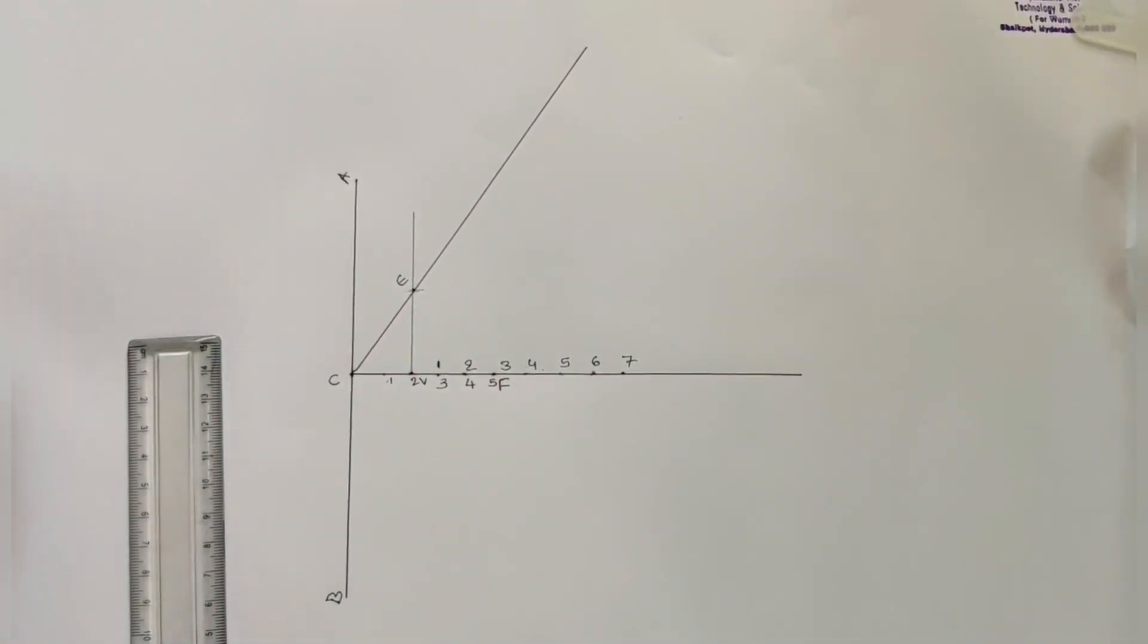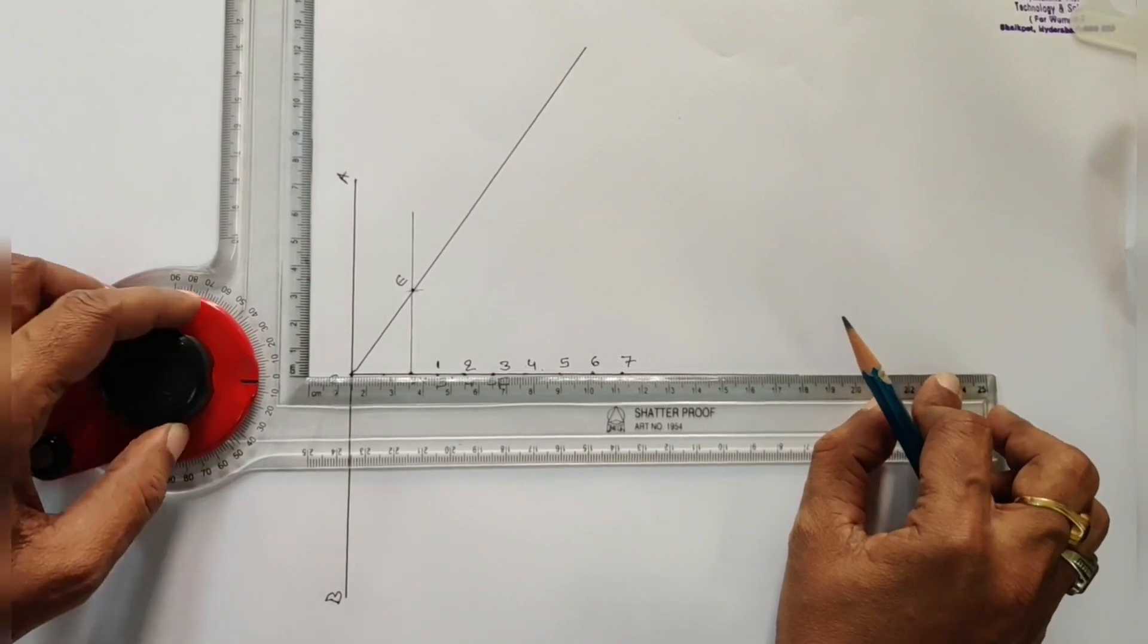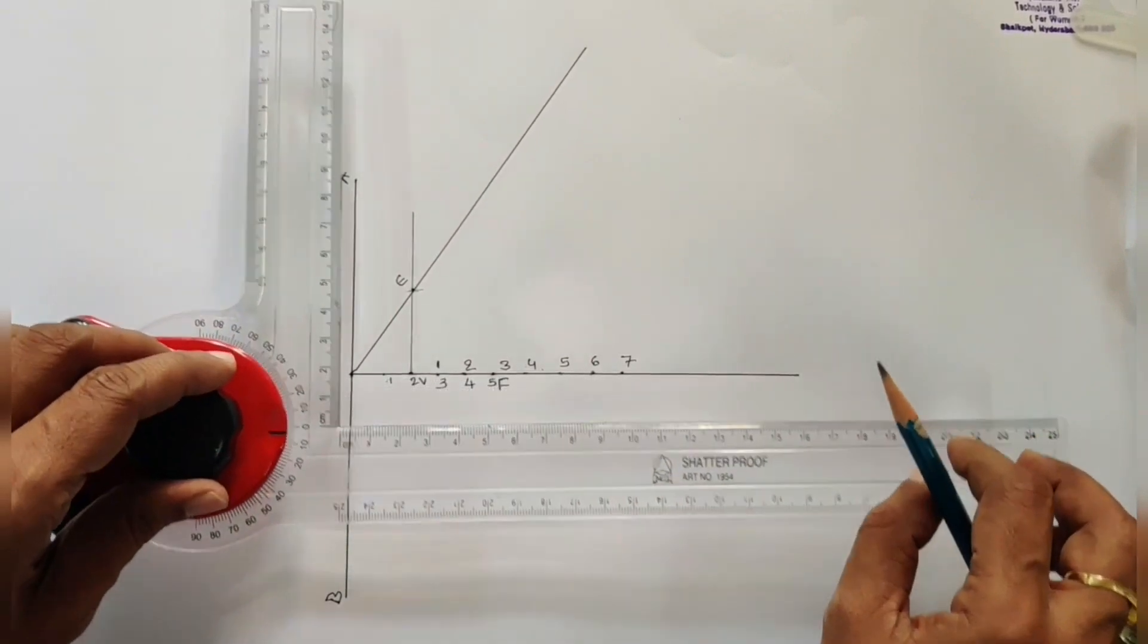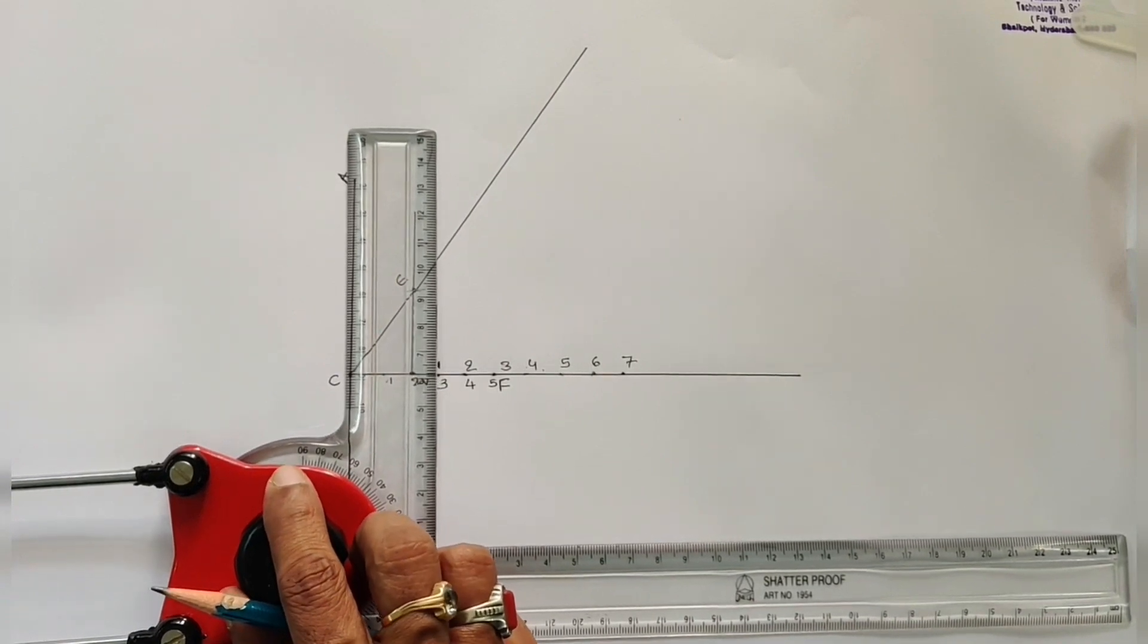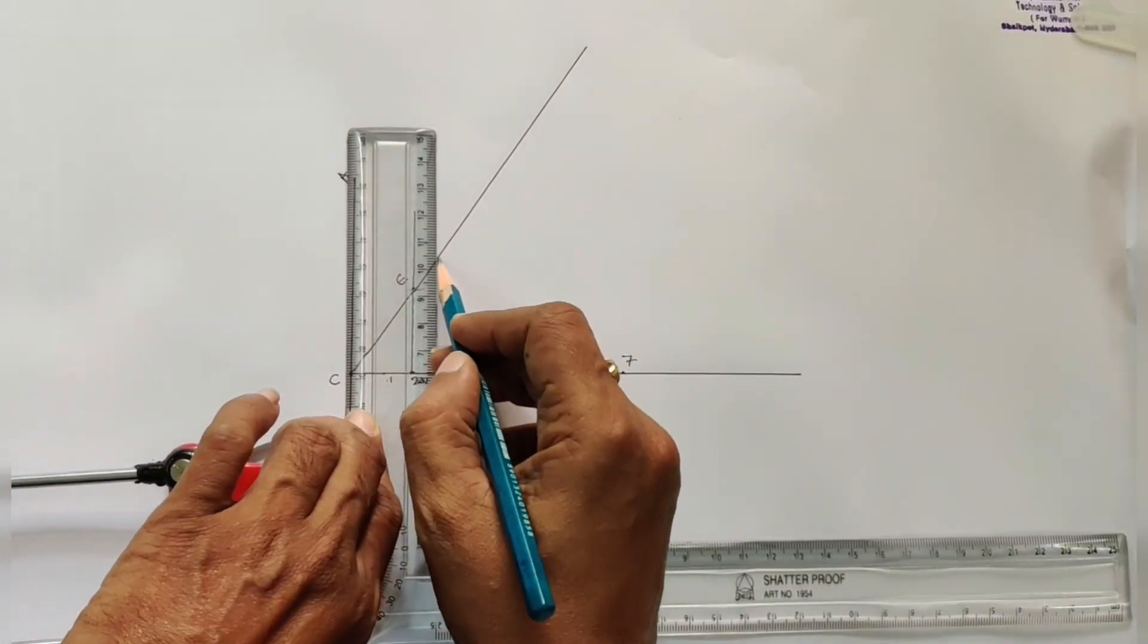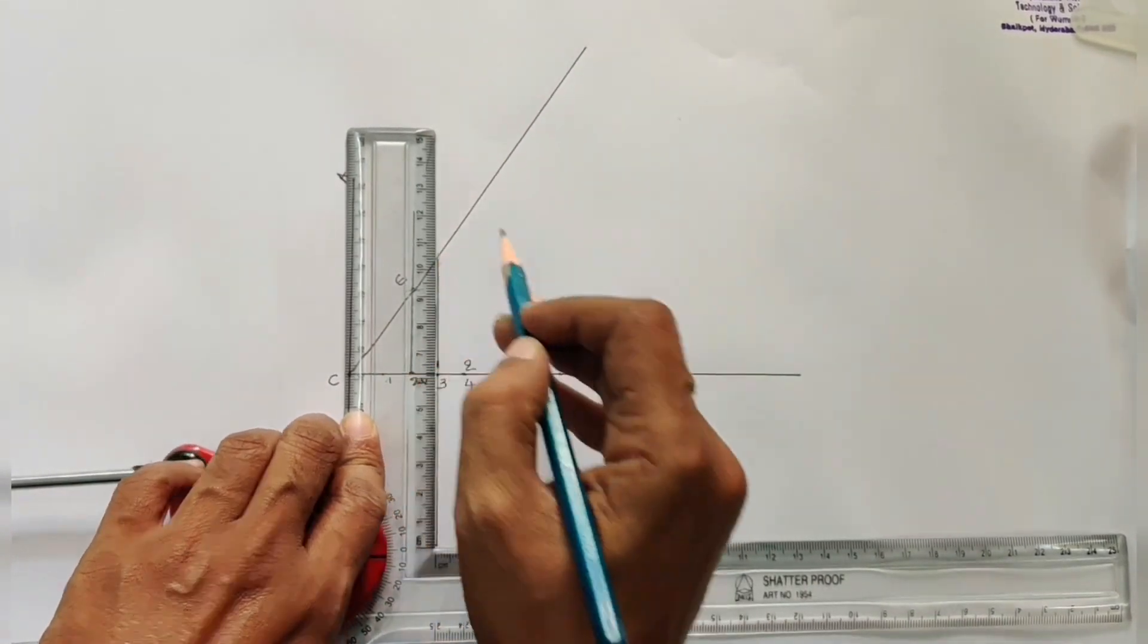After that, perpendicular to axis line, passing through 1, 2, 3, etc., those division points on the axis, draw perpendiculars. See that this perpendicular line meeting the inclined line.